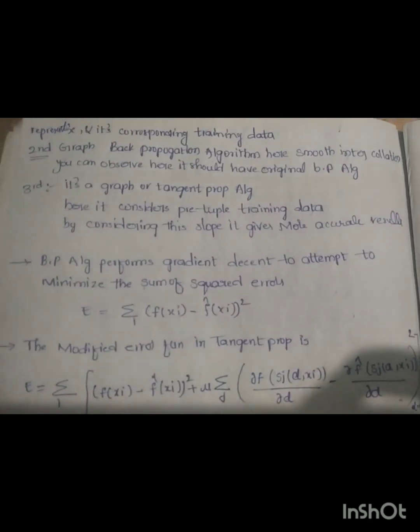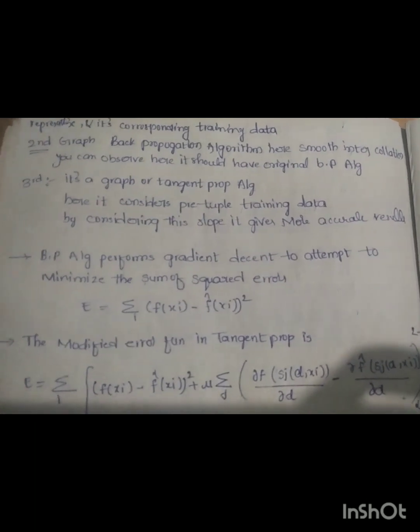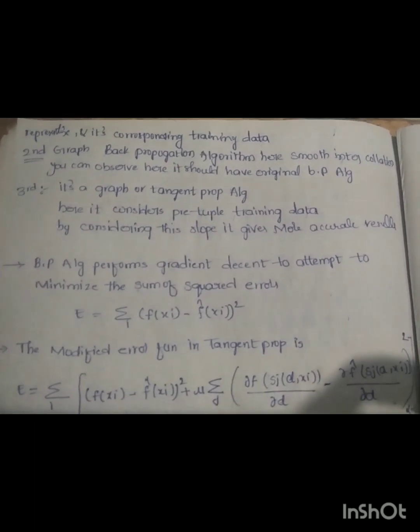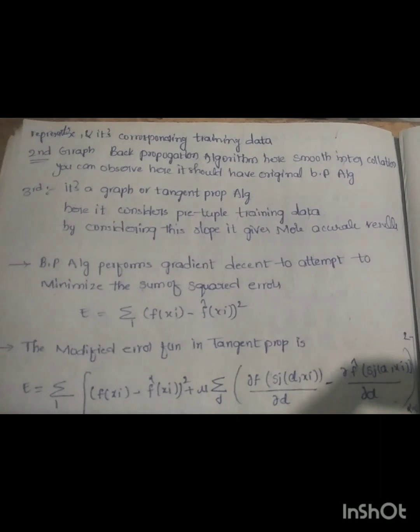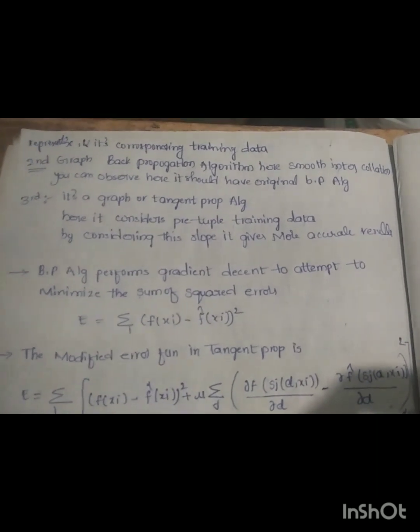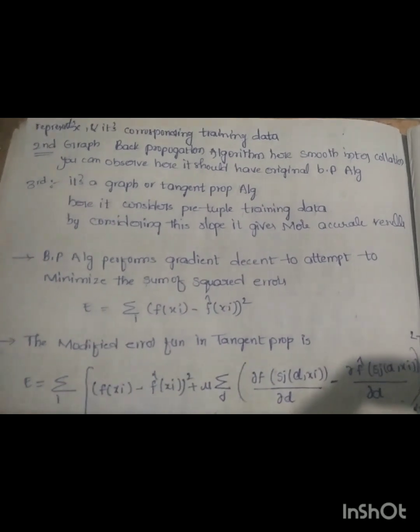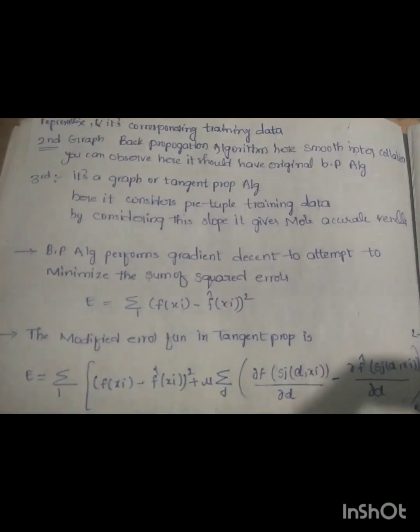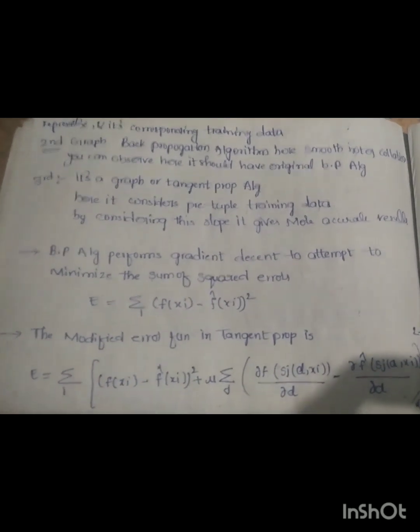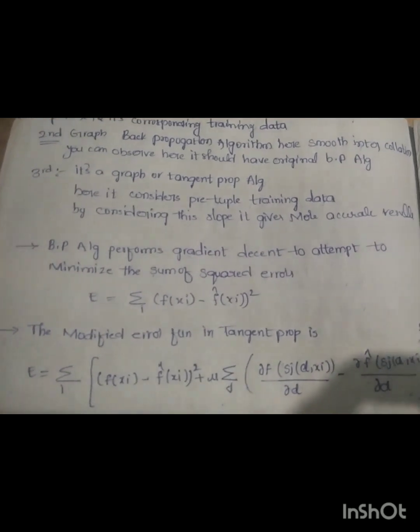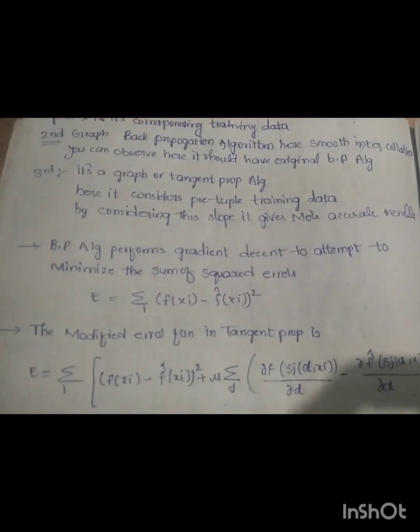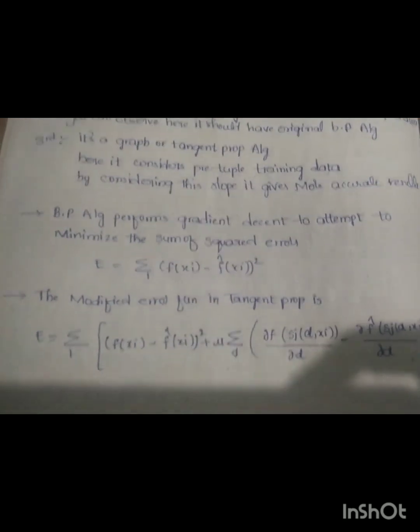The second graph represents the backpropagation algorithm with smooth interpolation. You can observe the original backpropagation algorithm. The third graph represents the tangent propagation algorithm. It considers three-tuple training data, and by considering this, it gives more accurate results.